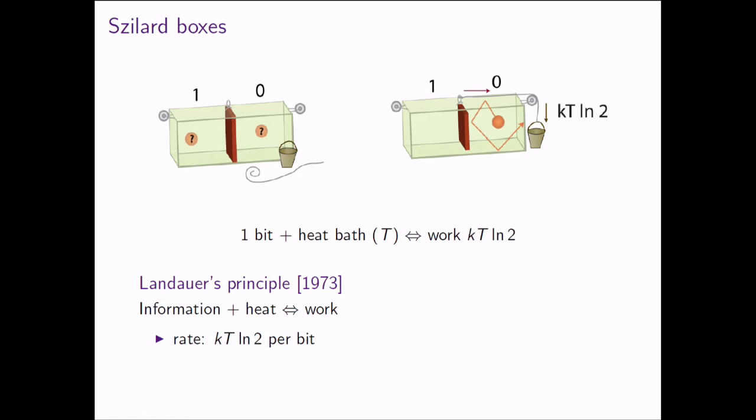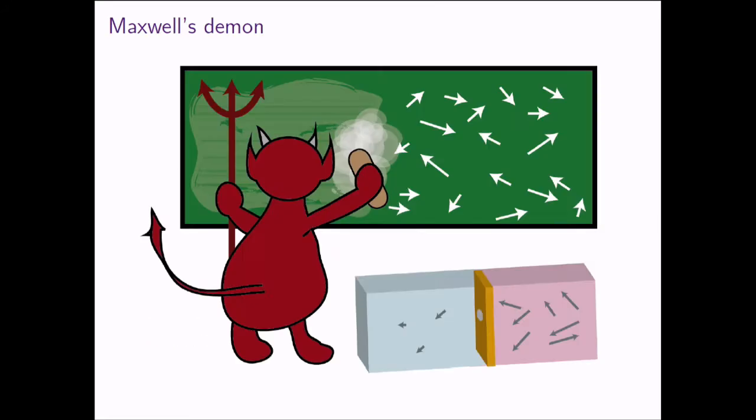Heat means energy we don't have good control of; work means energy we know where it is — like a lifted weight. What's interesting is the conversion rate: kT log 2 per bit. And this is the solution to Maxwell's Demon problem.